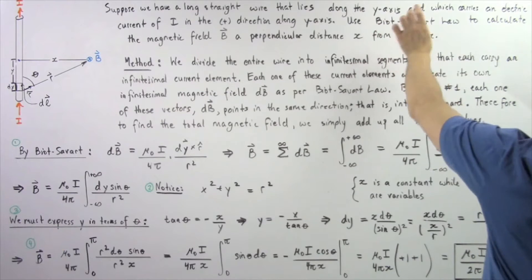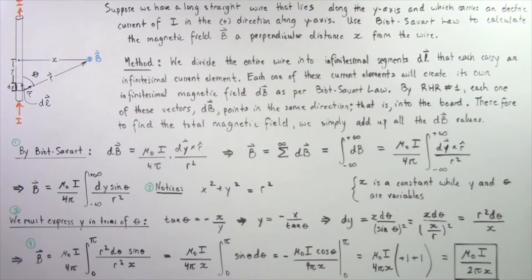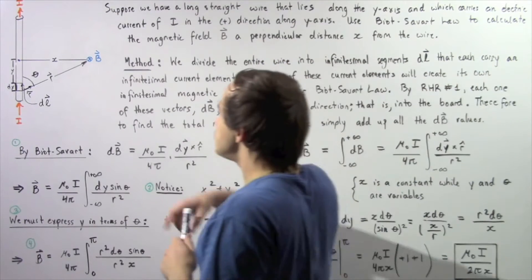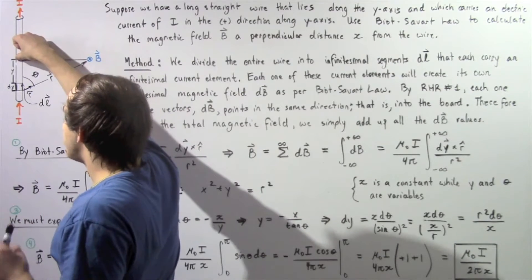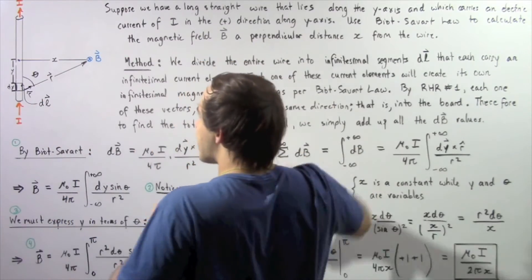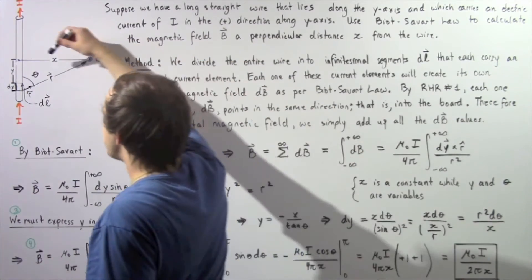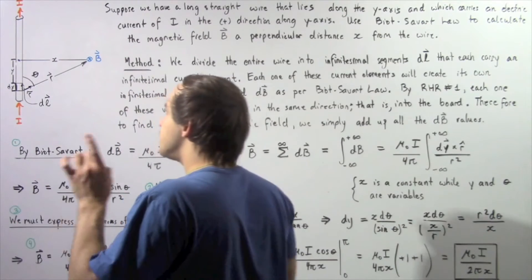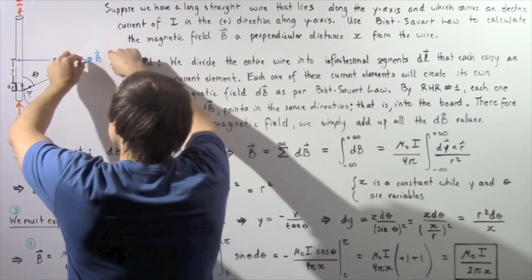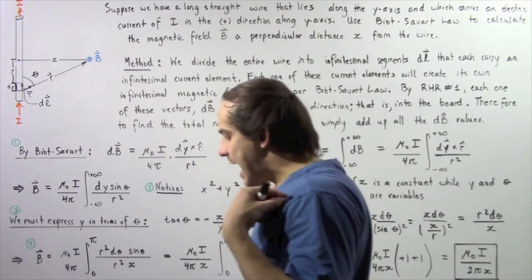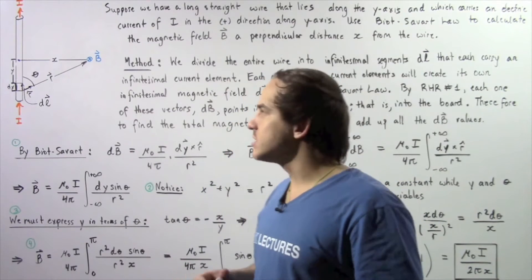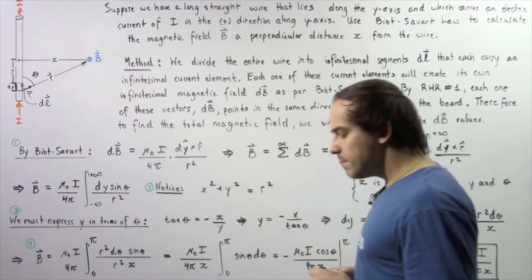We want to use the Biot-Savart Law to calculate the magnetic field B at a perpendicular distance x from the wire. Let's choose this point to be the midway point between the two sections of our wire. This is our x-axis, this is our y-axis, so that this point is the origin. The distance from the origin to the point at which we're examining our magnetic field is given by x.